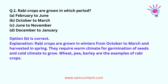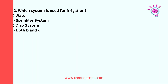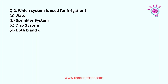Option B is correct. Rubby crops are grown in winters from October to March and harvested in spring. They require warm climate for germination of seeds and cold climate to grow. Wheat, pea, and barley are examples of rubby crops. Which system is used for irrigation?